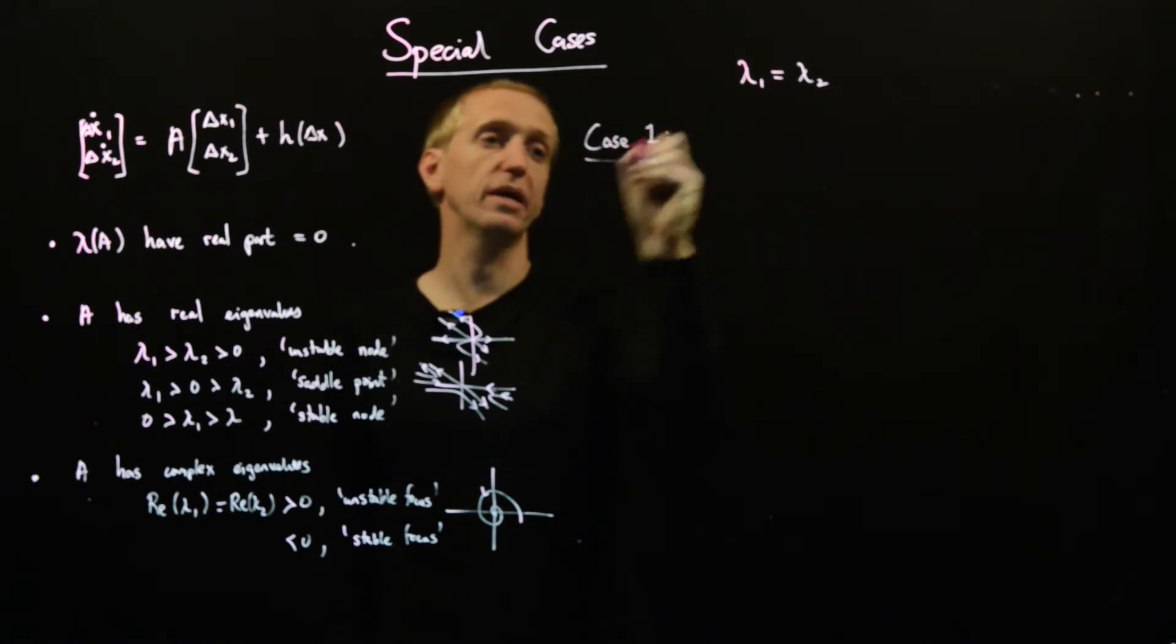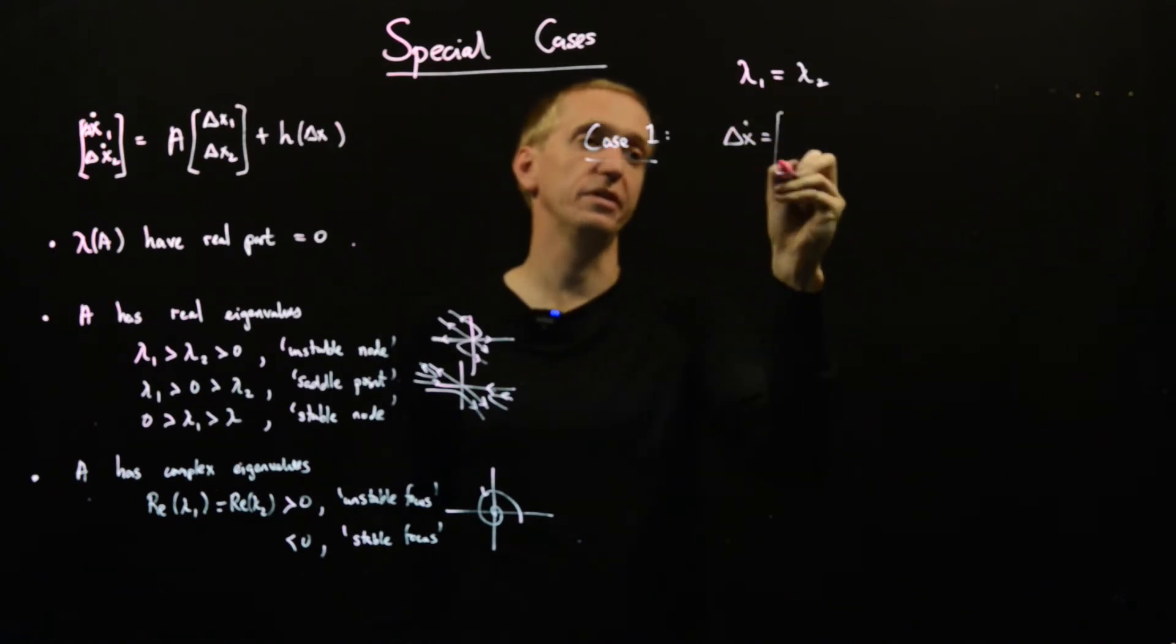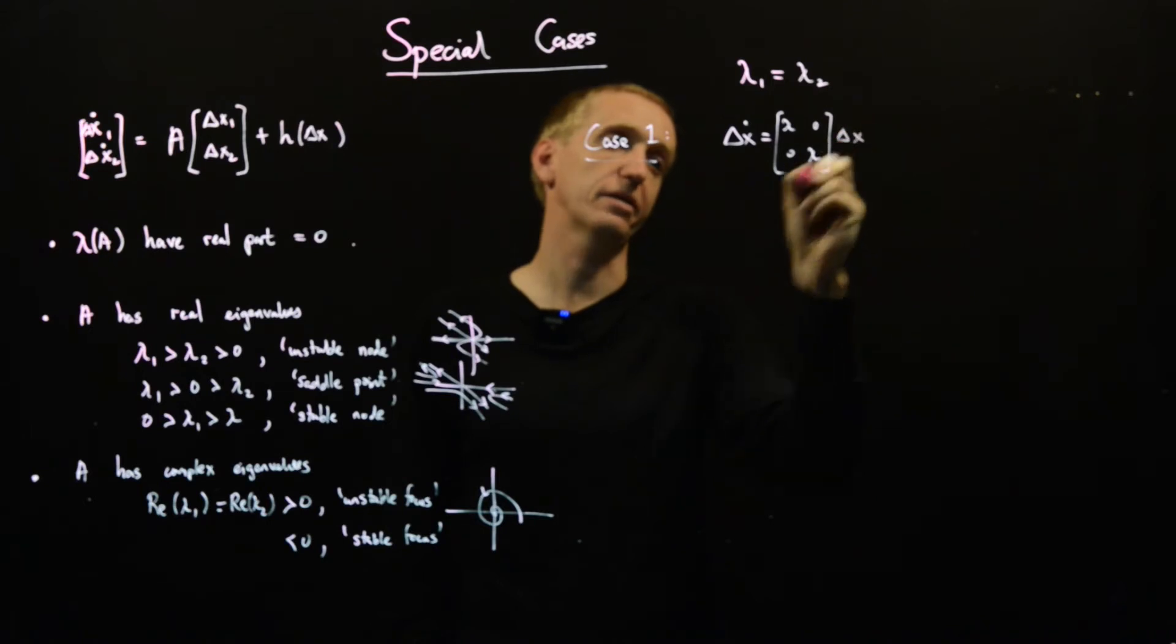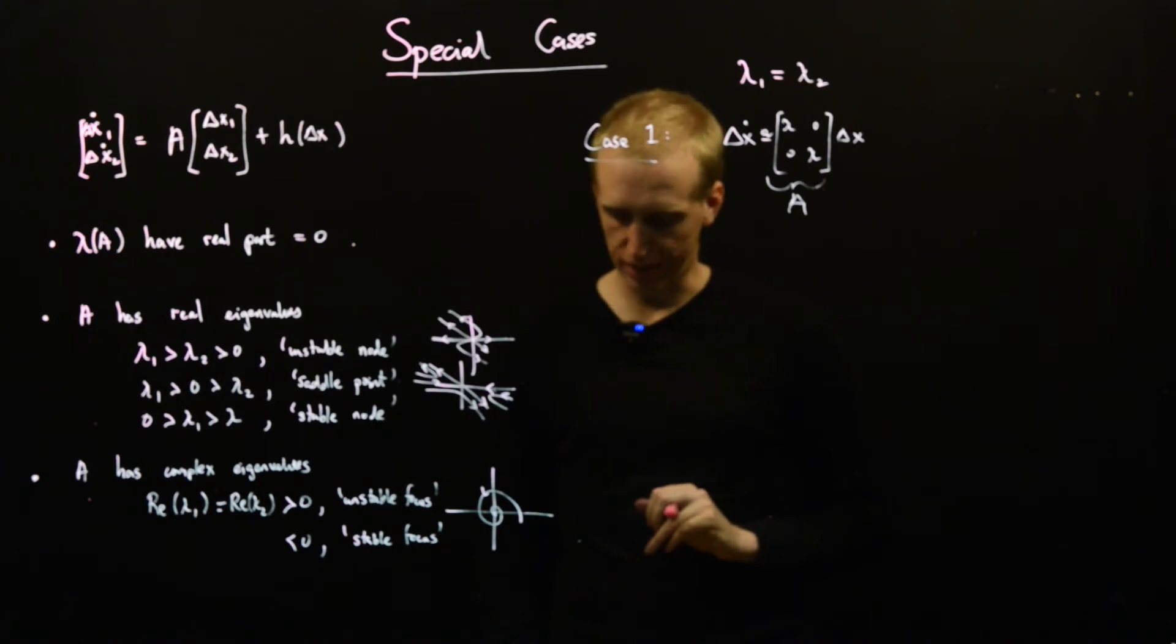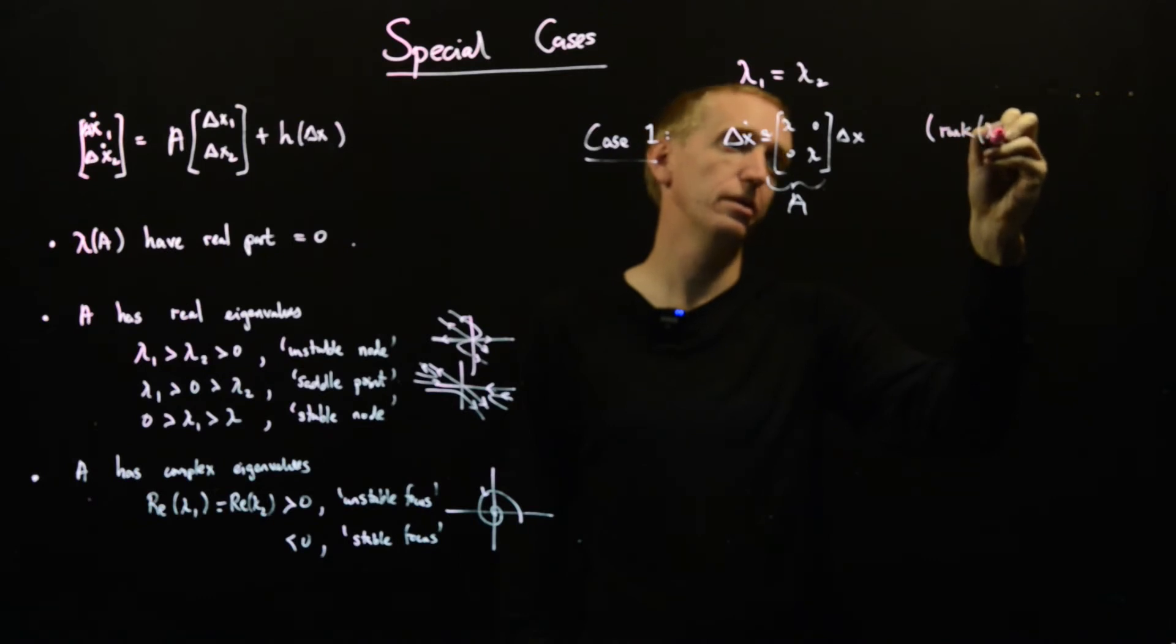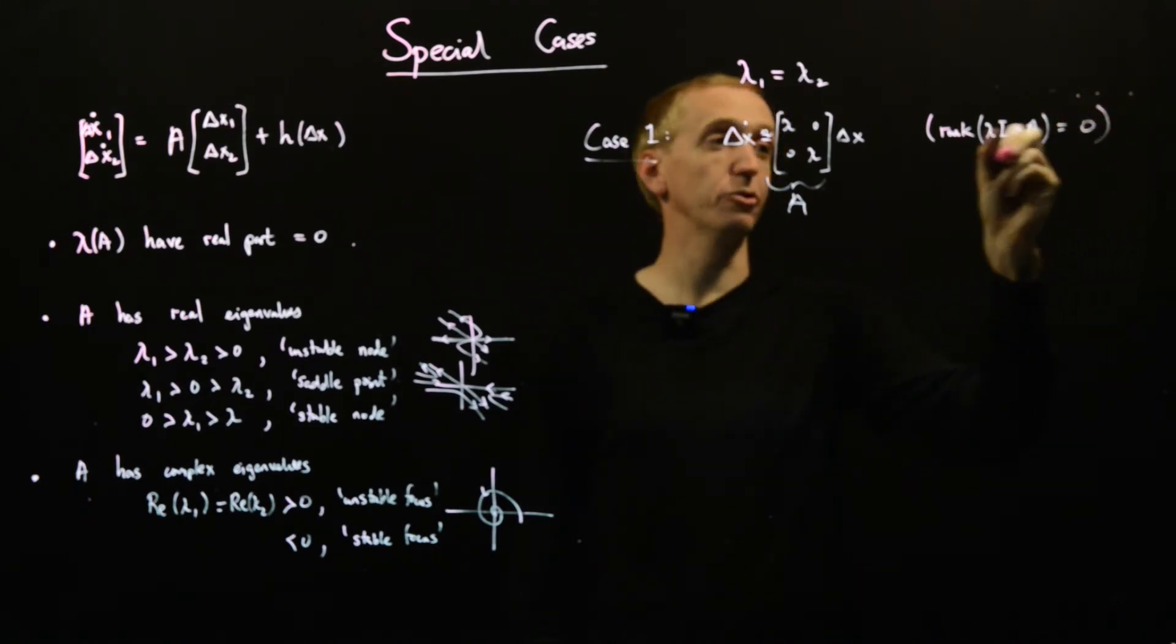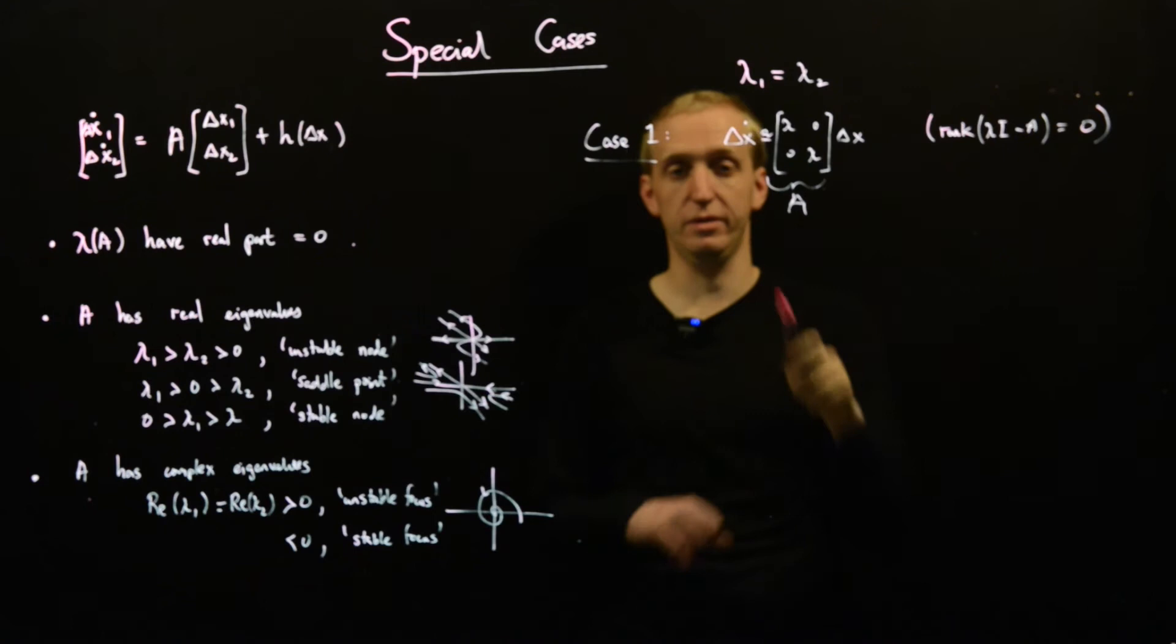And case 1, again, we're just going to illustrate it by an example. Let's say that delta x dot is equal to lambda, lambda, 0, 0, delta x. So this is our A matrix. There should be an approximation here because we've got some other junk up there. But okay, this is case 1. And the case 1, if you want to understand this in full generality, occurs when the rank of the matrix lambda i minus A equals 0. So at the eigenvalue of question, this matrix here has rank equal to 0. The details aren't important. This is such an example.